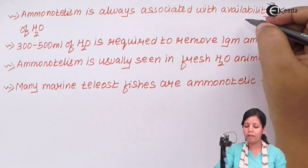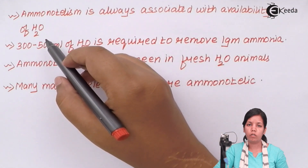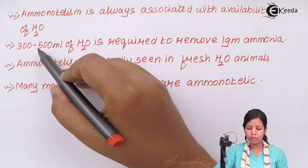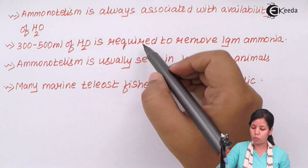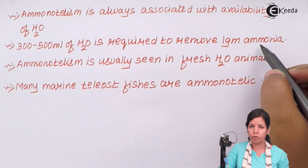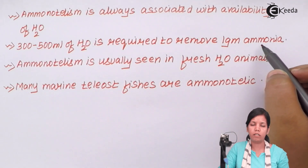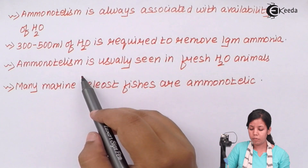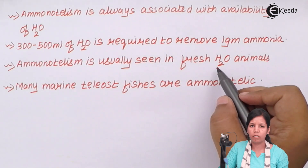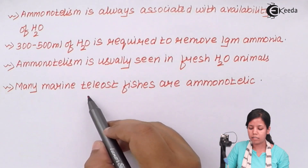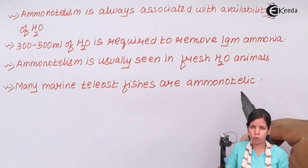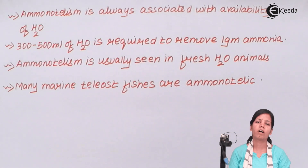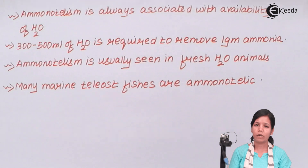Ammonia cannot be removed from the body without sufficient water. Approximately 300 to 500 ml of water is required to remove just one gram of ammonia from the body, which is quite a large expenditure of water just to remove an excretory product. Ammonotelism is usually seen in freshwater animals. Many animals termed as teleost fishes are also ammonotelic.